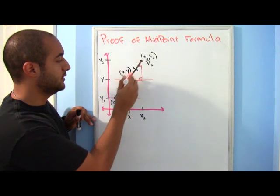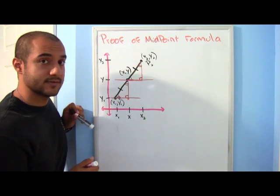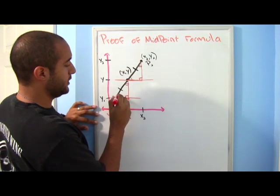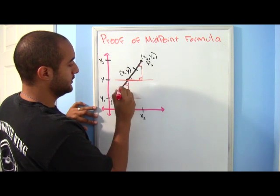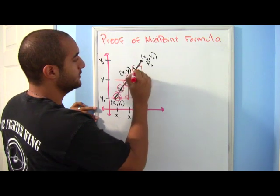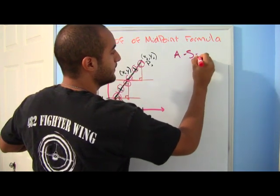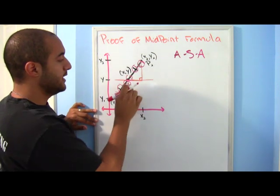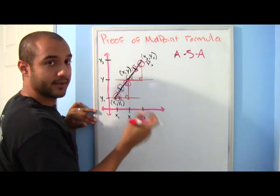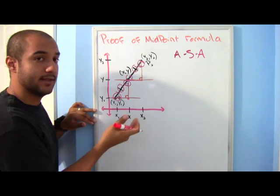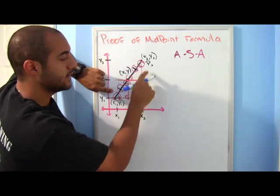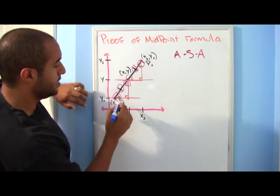We do have a corresponding side that's the same also. Because of that, we have what we call angle-side-angle. That lets us know that these two triangles are congruent — they're exactly the same. Let's see how that's going to help us. Let's go ahead and see how long these sides of our triangle are.